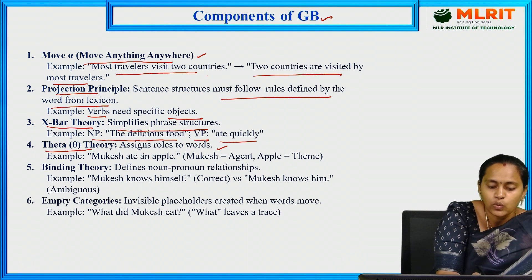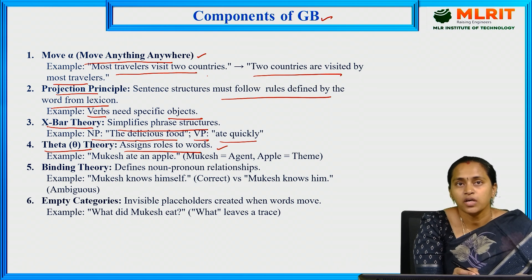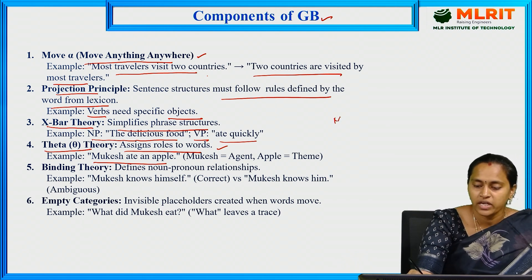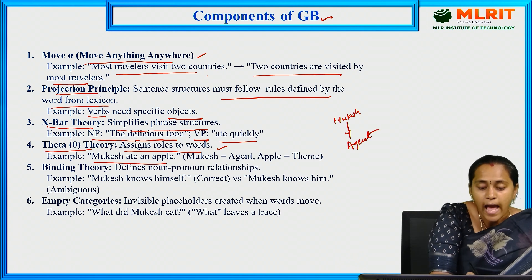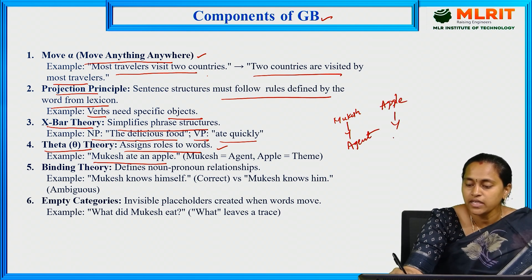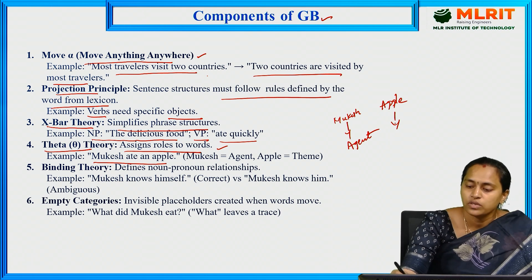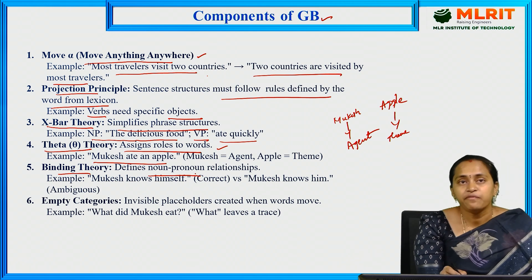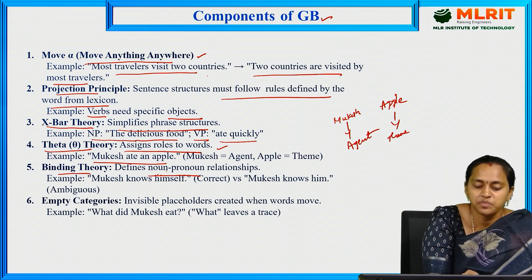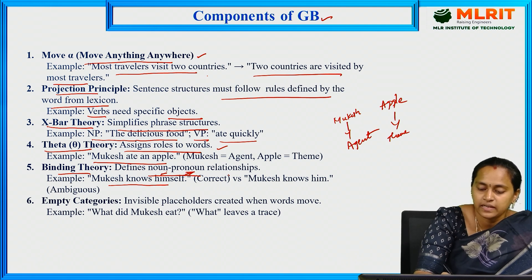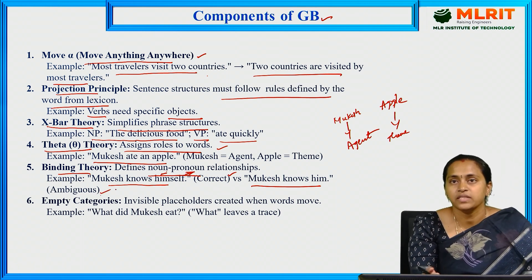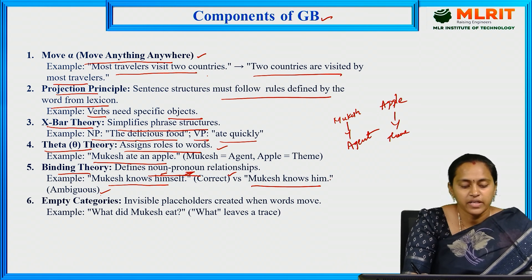Theta Theory assigns roles to words. For example, in 'Mukesh eats an apple,' Mukesh is the agent and apple is the theme. Binding Theory defines the relationship between pronouns and nouns. For example, 'Mukesh knows himself' is correct, but 'Mukesh knows him' is ambiguous — referring to someone else — showing some ambiguity in sentences.